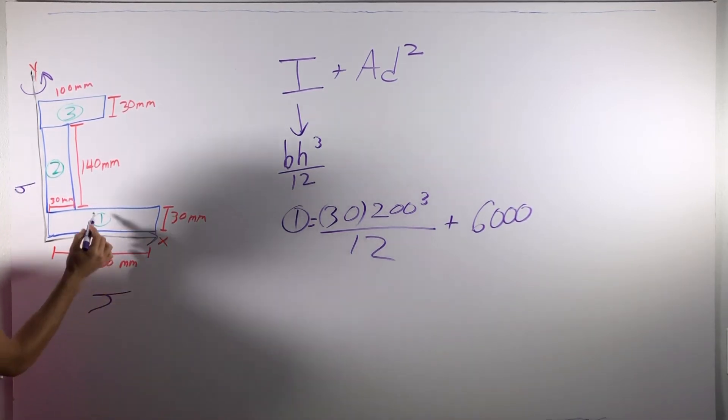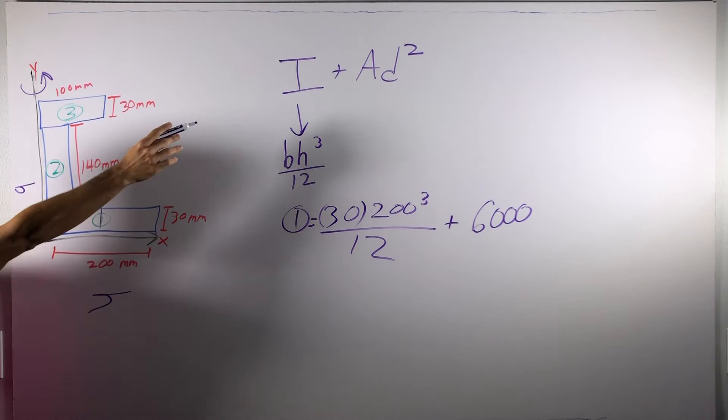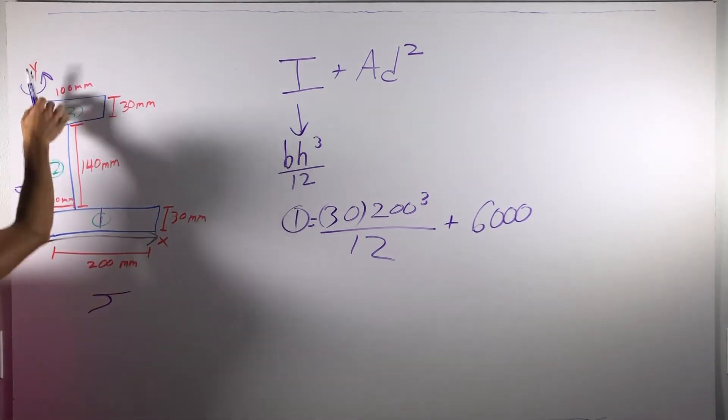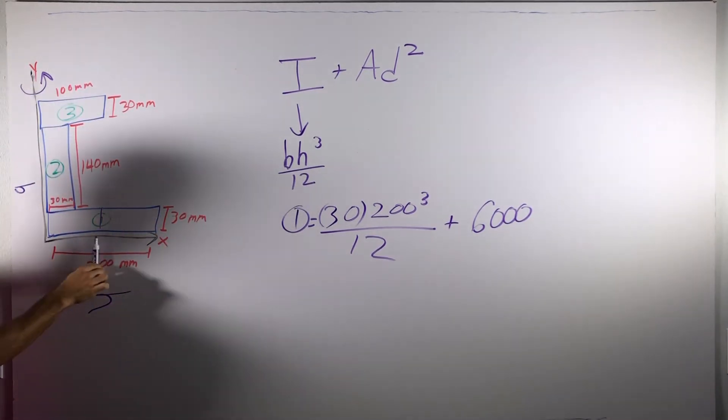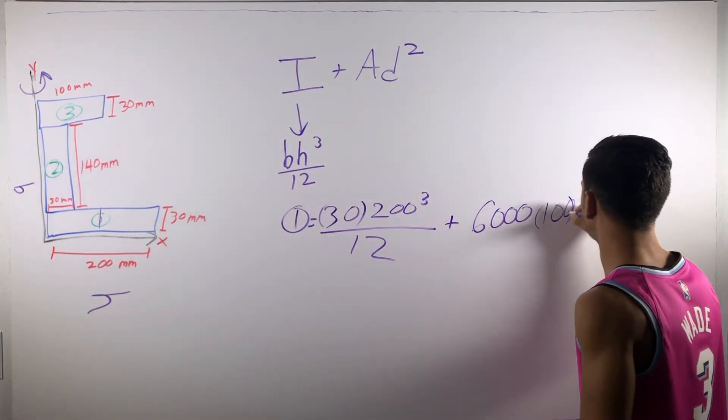So, you have here 200. So, our centroid for section one is just going to be 100. And since we're rotating about the y-axis, the D, the distance between the centroid of our section and whatever we're rotating about is simply just 100 for this specific base. So, that's 100 squared.